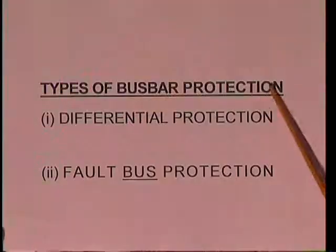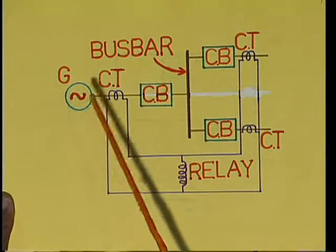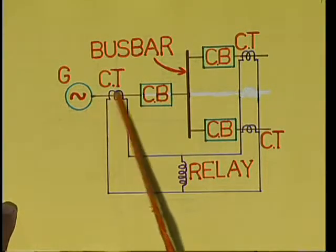Now coming to bus bar protection. Bus bars in generating stations or substations form an important link between incoming and outgoing circuits. Any fault on the bus bars causes considerable damage and disruption of supply. To ensure continuous supply, protection systems are also provided for bus bars. There are two types of bus bar protection: (1) differential protection, and (2) fault bus protection. In differential protection, a generator feeds the bus bar through a CT and circuit breaker. The bus bar supplies two outgoing lines, each through a circuit breaker and CT. All CTs are connected in parallel, and across this combination a relay (operating coil) is connected.